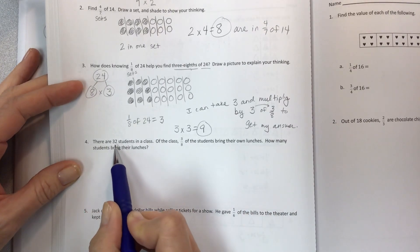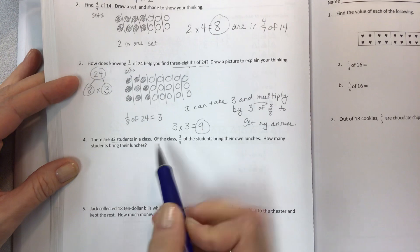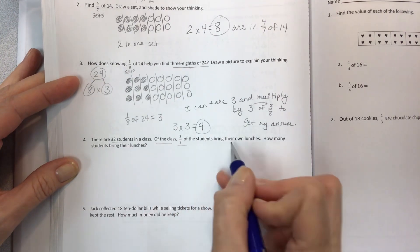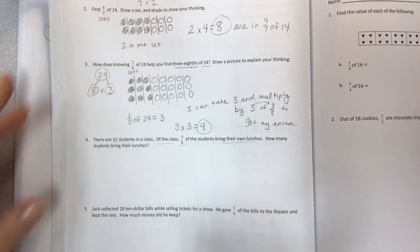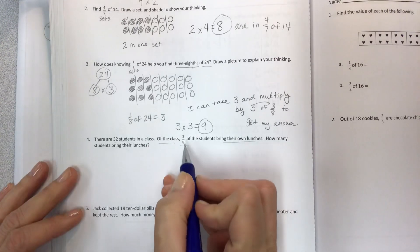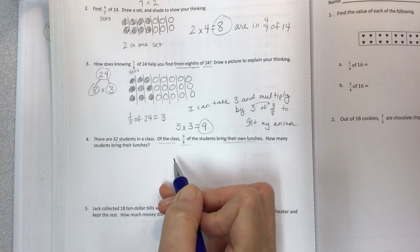Now, if this is one-eighth, how does knowing one-eighth of 24, and how many does that equal? It equals three. So how does knowing this help you to find three-eighths of 24? I can take three and multiply by three of three-eighths. So it's basically you're taking the numerator to get my answer. And then let's show three times three equals nine. And then let's show here. This is two-eighths. This is three-eighths. And how many are shaded? Nine. So it should be really concrete. And as we get away from the models, it becomes very just math stuff multiplying, and it's really very easy and fun. I hope you guys are all successful with it. Okay, number four. There are 32 students in a class. Of the class, three-eighths of the students bring their own lunches.